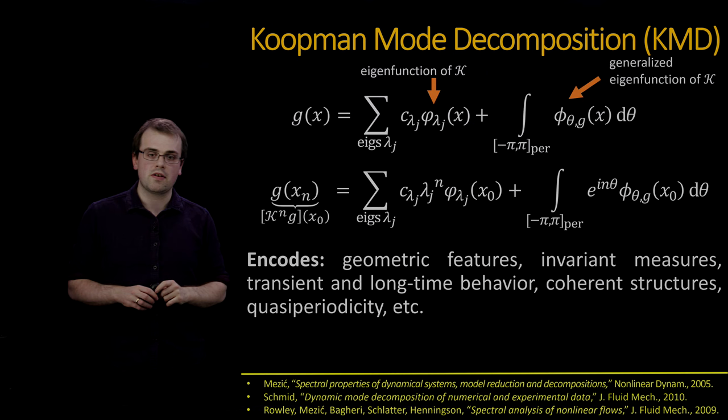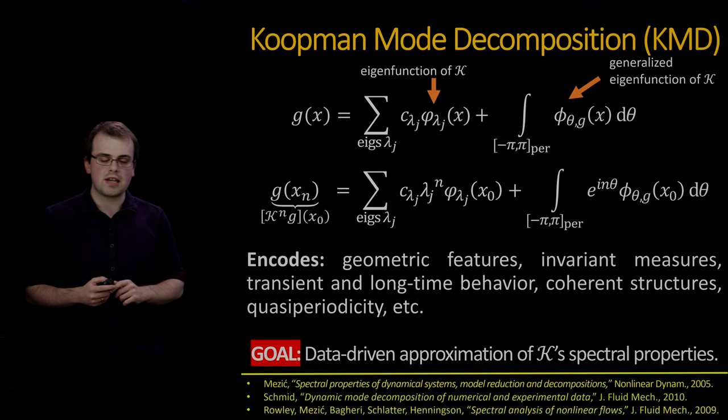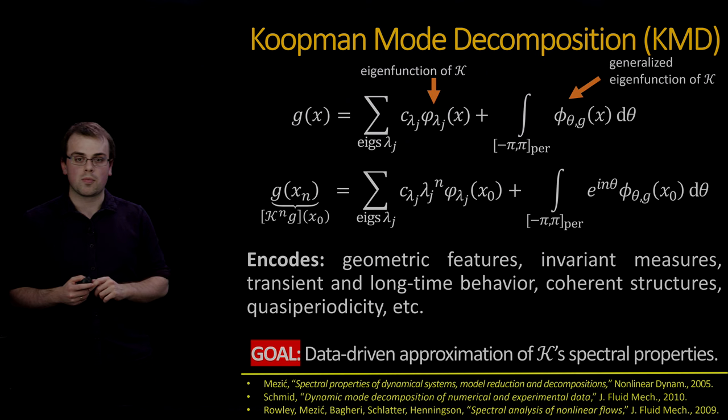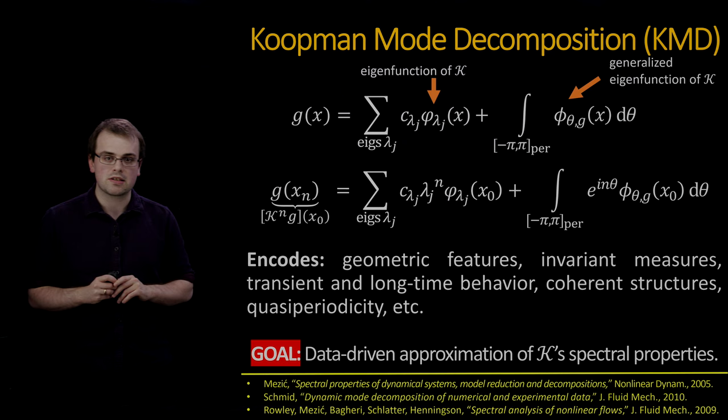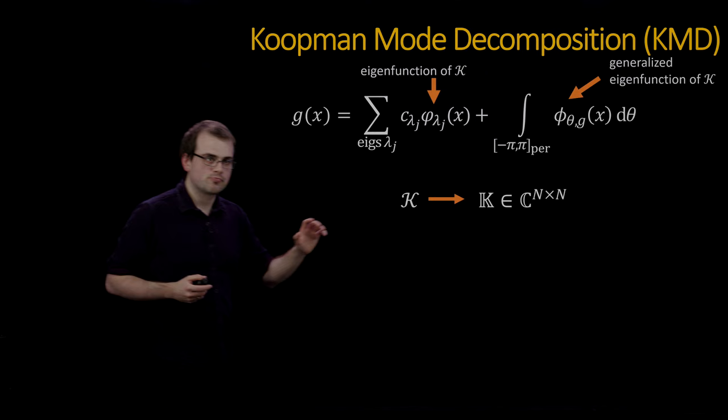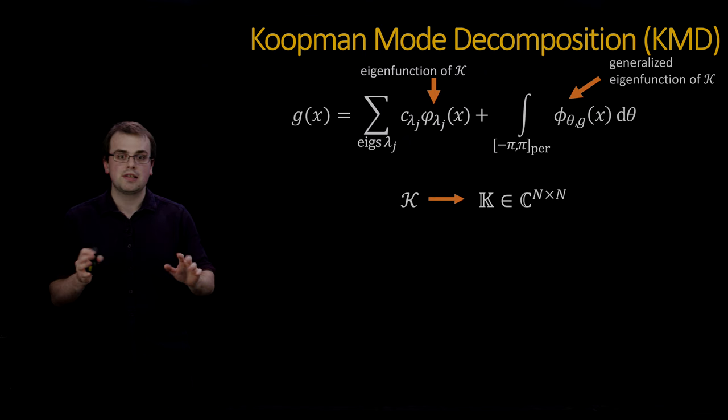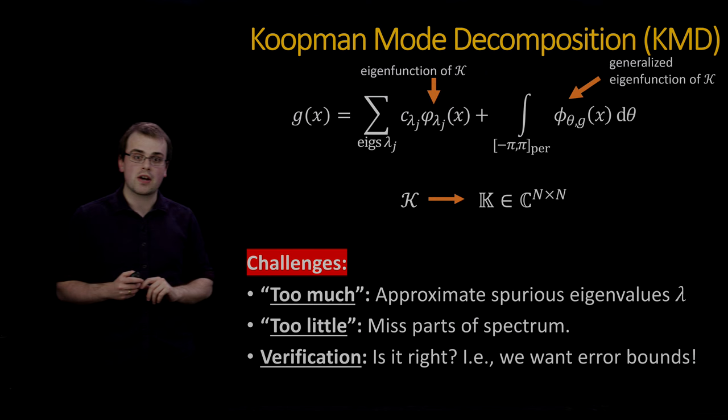The Koopman mode decomposition encodes all sorts of information about the dynamical system: its geometric features, invariant measures, long and short time behavior, coherent structures, these coefficients here or Koopman modes, quasi-periodicity, etc. Our goal now becomes the data-driven approximation of the spectral properties of the Koopman operator. We've got an infinite dimensional operator, and we want to approximate its spectral properties from a finite amount of snapshot data. So at some point, we're going to have to take a truncation to a finite matrix.